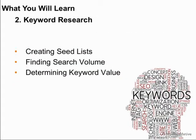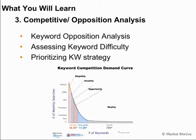Through keyword research we'll create seed lists and explore the entire keyword universe within your niche or business. We'll determine how valuable those keywords are and which ones are most important based on what you're trying to do. Then we'll do opposition analysis — running keywords through search results to determine how competitive they are and if we can compete for them — and prioritize our strategies and optimization techniques based on keyword difficulty and benefit.